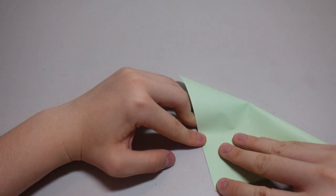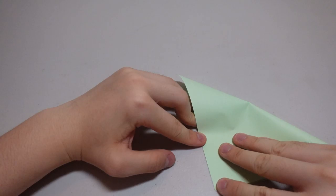First off, you want to start off by folding the regular paper in half into a triangle.